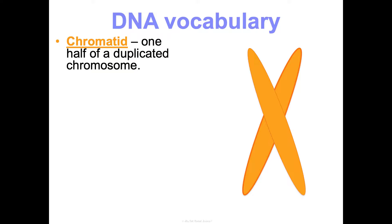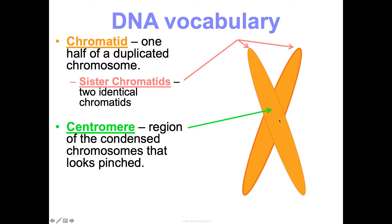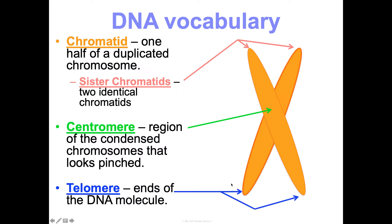When your chromosome gets duplicated in the S phase of interphase, we refer to each side as a chromatid — one half of a duplicated chromosome. When you see an X in reference to a chromosome, that's a duplicated one after S phase. These two identical chromatids are referred to together as sister chromatids — two copies of the exact same chromosome. The central condensed region is known as the centromere, and the ends of the chromosome are referred to as telomeres.